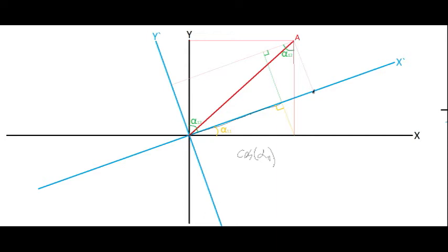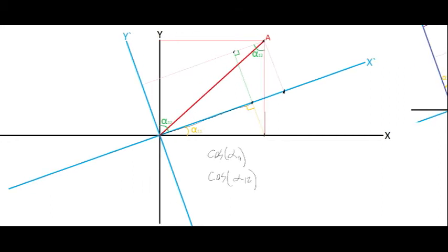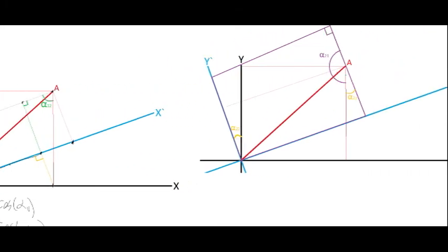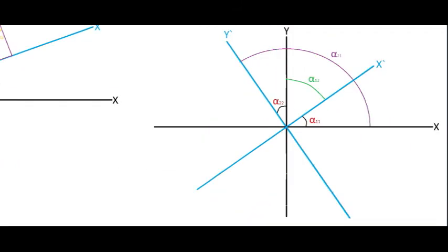We still need to get from here to here, so we use this right triangle to obtain this distance — which is the same as this other distance since it's a rectangle. Going from this corner to this one, this is our hypotenuse and this is our adjacent, so we use the cosine of alpha-1-2. We do the same thing for the y-prime coordinate — it's essentially the same process — and what we end up with is that alpha-1-1 and alpha-1-2 are related.